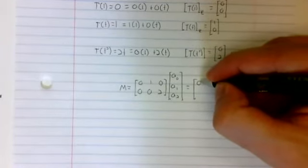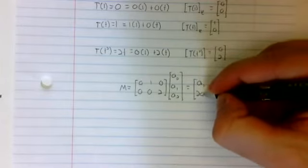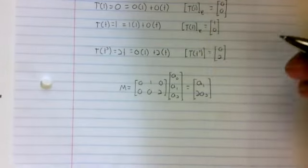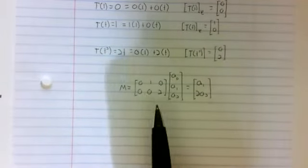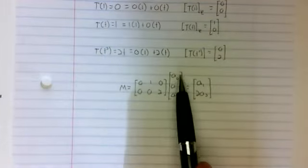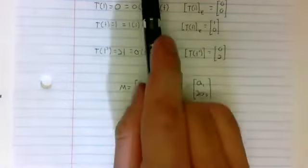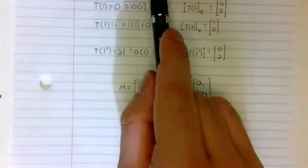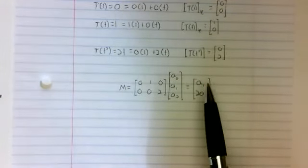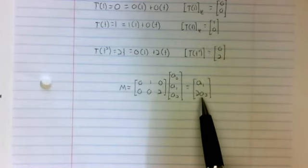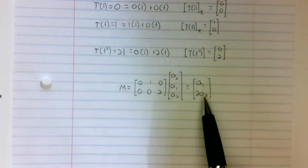So this matrix times 1a sub 0 plus t a sub 1 plus t squared a sub 2 is 1a sub 1 plus 2a sub 2t.